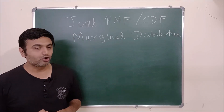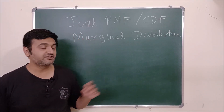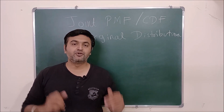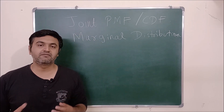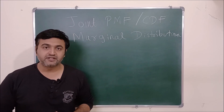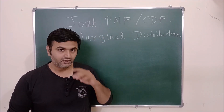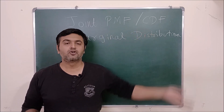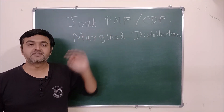Today we are going to talk about joint probability distribution and marginal distribution, specifically concentrating on discrete random variables. When dealing with discrete random variables, the joint probability distribution is called the joint probability mass function. Once you study the probability mass function, the next obvious thing is the cumulative distribution function. Let's try to understand what these things are.